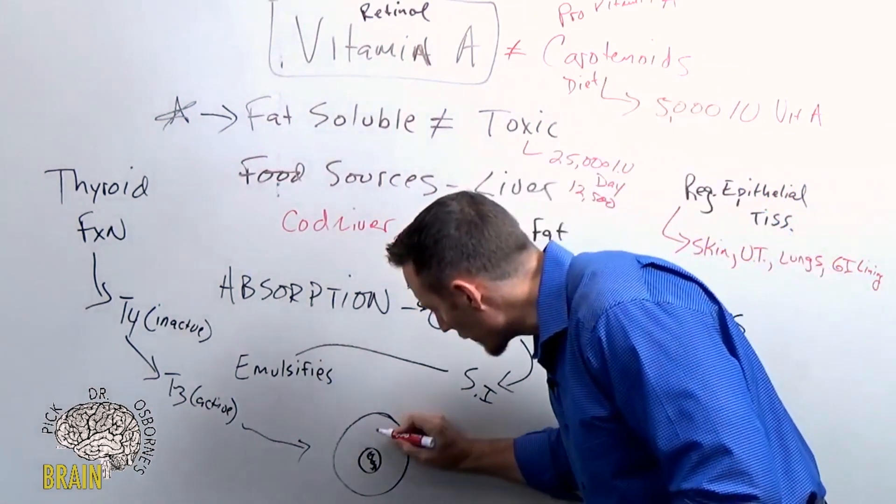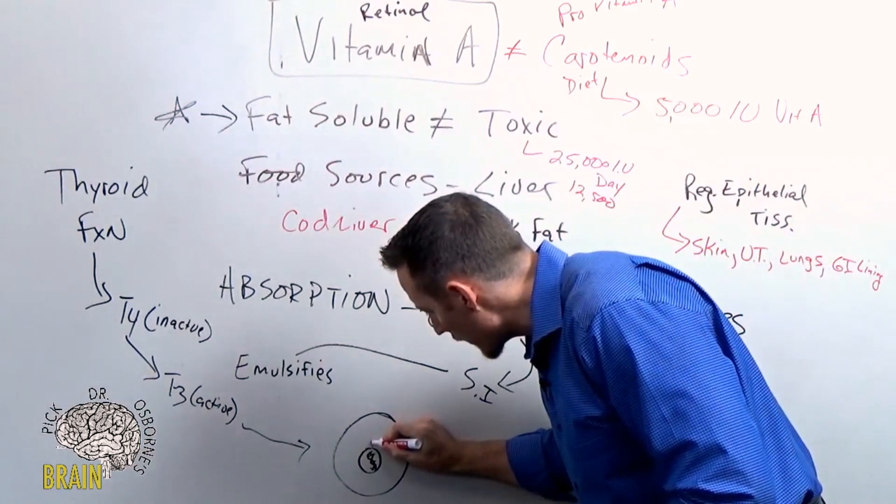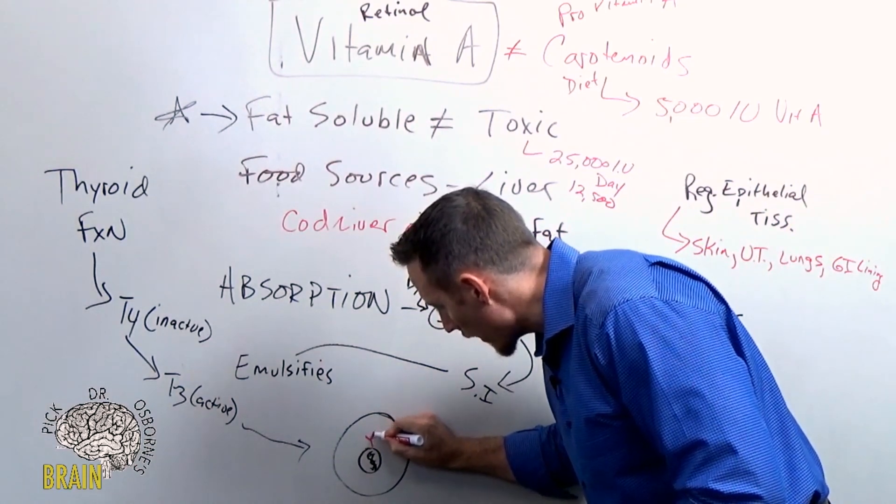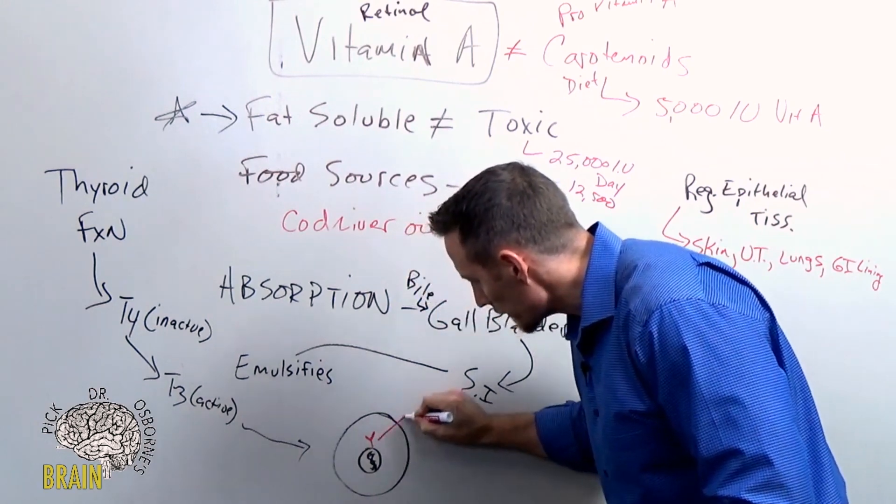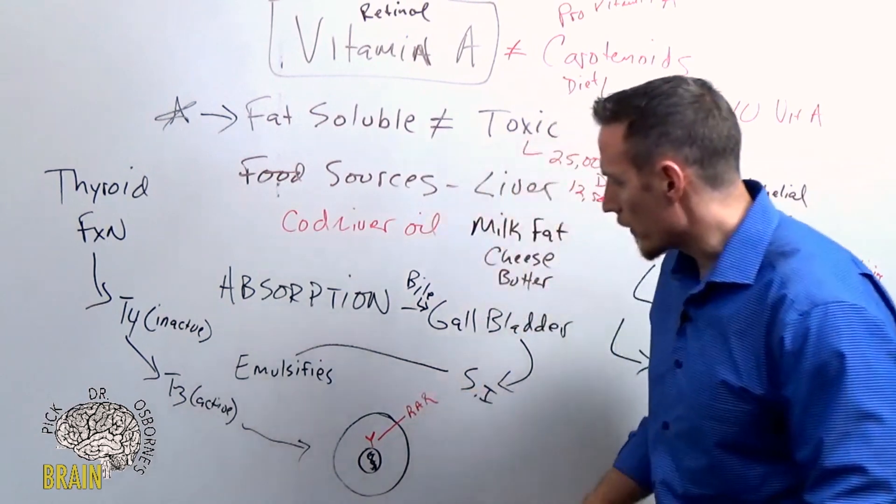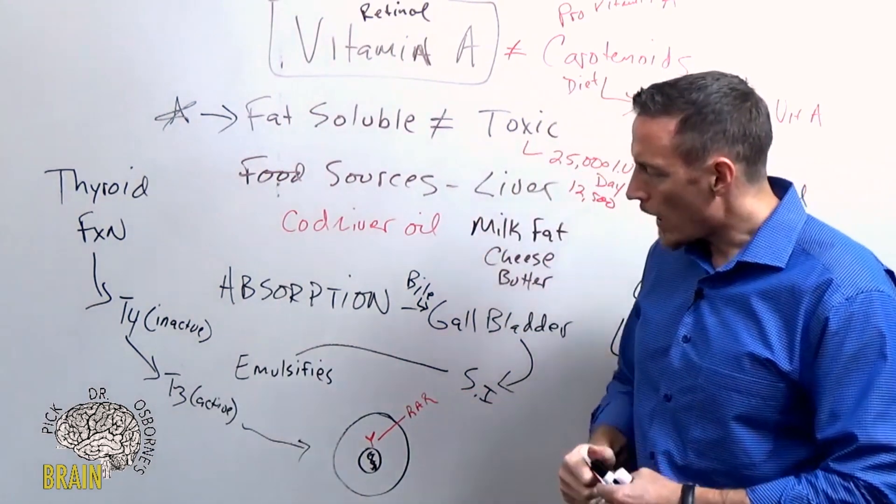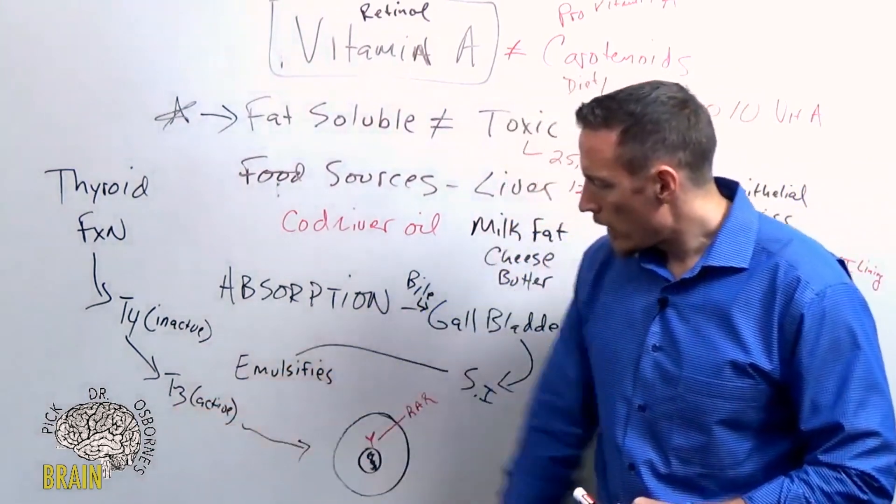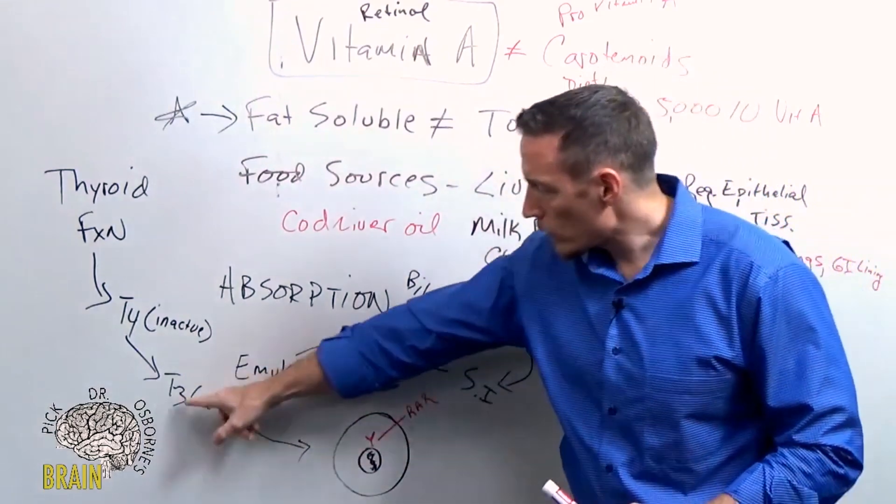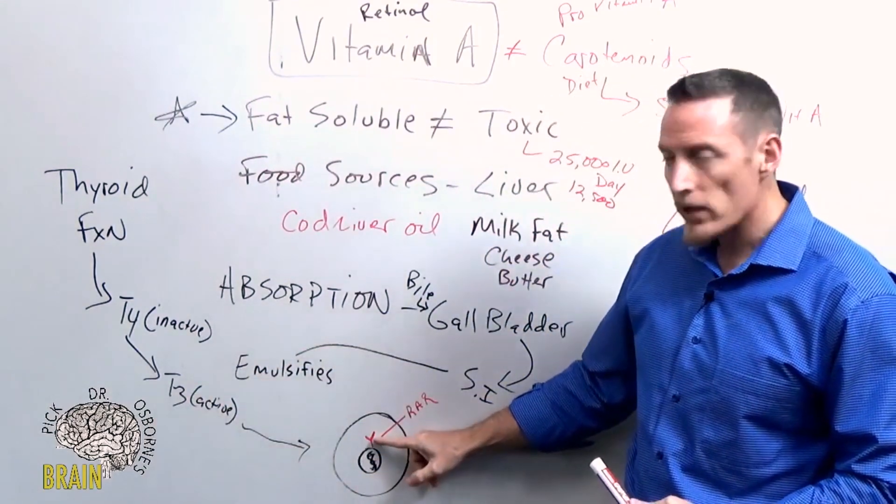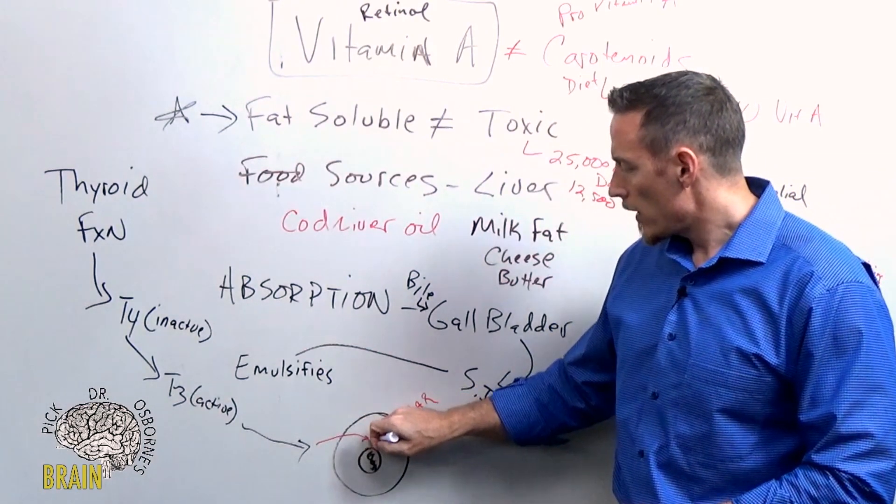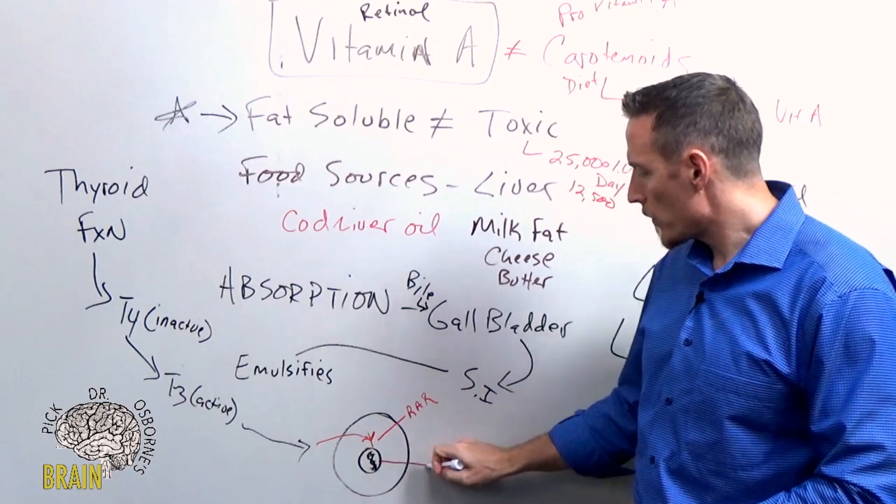Embedded in that nuclear membrane, you have this receptor, and it's called a retinoic acid receptor, RAR for short. Now, for your thyroid hormone, your T3, to tell your metabolism to speed up, what do you need? You need T3 to connect with this receptor, this retinoic acid receptor. It has to bind to that in order for your metabolism to be turned up.